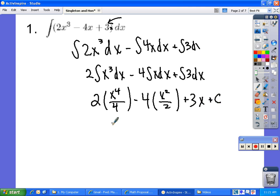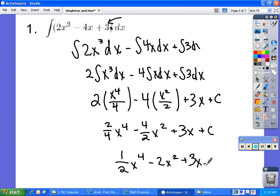Following this we simplify and we get 2 over 4 x to the 4th minus 4 over 2 x squared plus 3x plus c. We can simplify again and we end up with 1 half x to the 4th minus 2x squared plus 3x plus c.